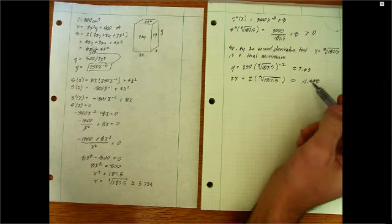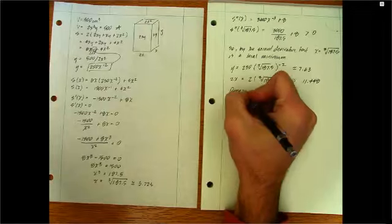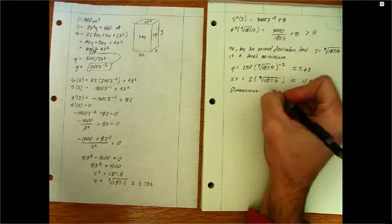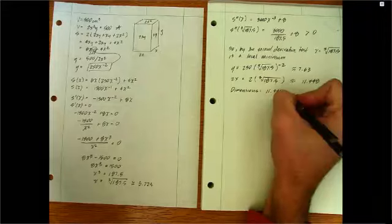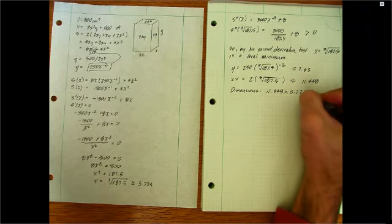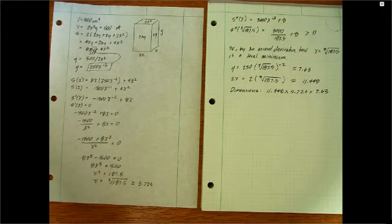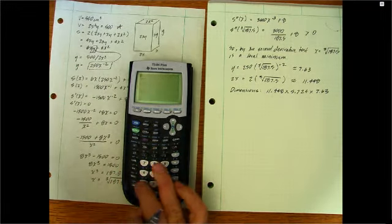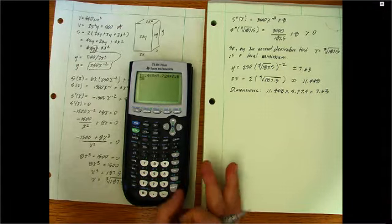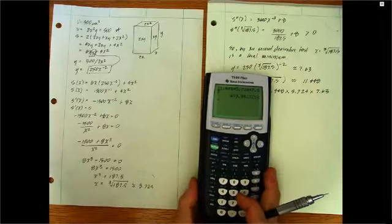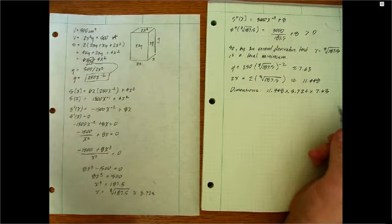So now we can calculate the surface area since we know X, Y, 2X, so we know how to build this. So here are our dimensions. Our dimensions are 11.448 by 5.724 by height of 7.63. Of course, a quick check would be to multiply these guys together. I'll do that really quickly. 11.448 times 5.724 times 7.63. And when I do that, I get something really, really close to 500. If you can see that, 499.98. A little bit of round off error, but indeed the volume is maintaining at 500, which is what we expected.